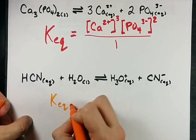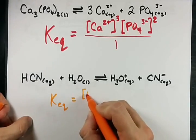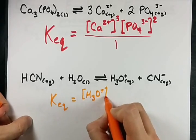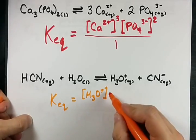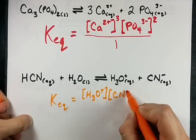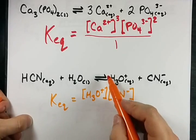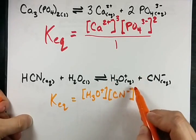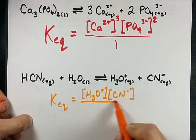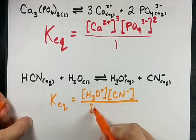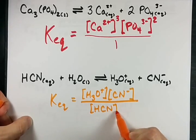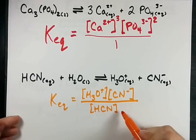My KEQ here is aqueous H3O+ concentration times aqueous CN- concentration. 1 and 1 are my exponents. And in my denominator, I'll put aqueous HCN concentration and water.